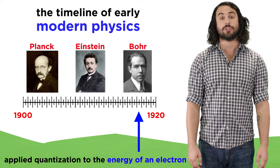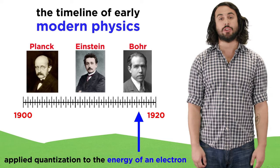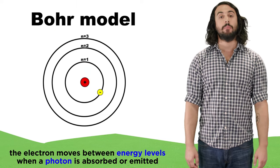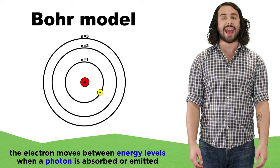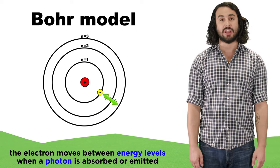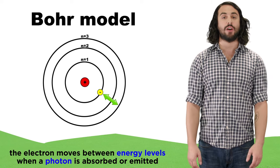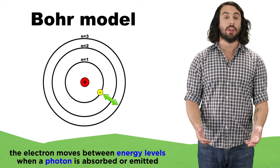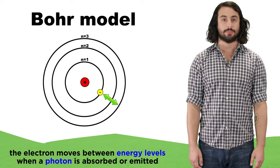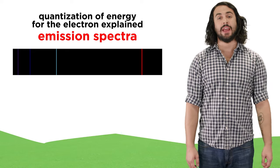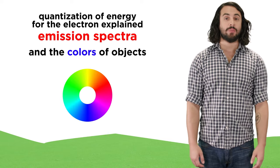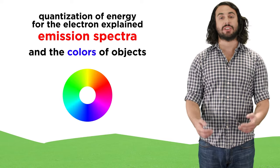Moving on from Einstein, Niels Bohr showed that quantization of energy also applies to the energy of an electron in a hydrogen atom. Bohr proposed that the electron can only inhabit specific energy levels, and that it will move between these energy levels when absorbing or emitting a photon of an energy that is equivalent to the difference in energy between the two energy levels involved in the transition. This model was able to explain the emission spectrum of hydrogen and other elements, and by extension the color of every object that reflects light.